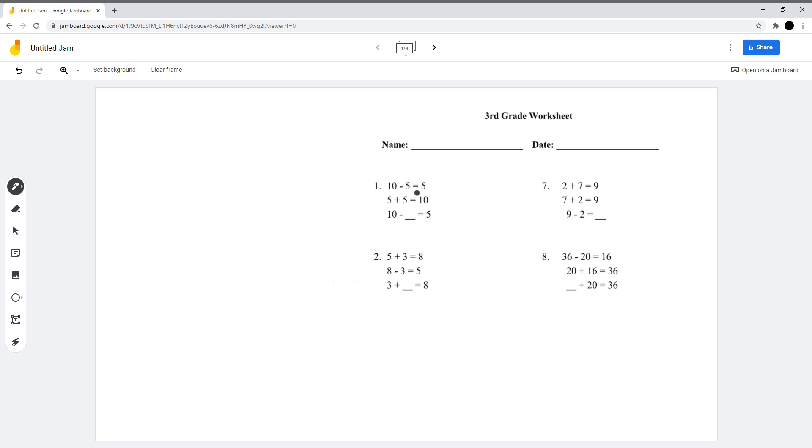Number one: 10 minus 5 is 5, 5 plus 5 is 10. Then, 10 minus what is 5? To solve this question, you can just subtract this or just find the missing number.